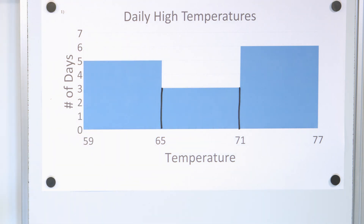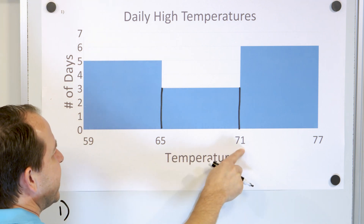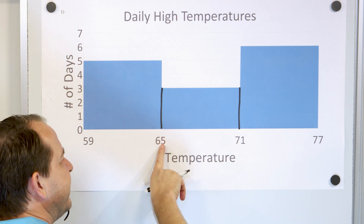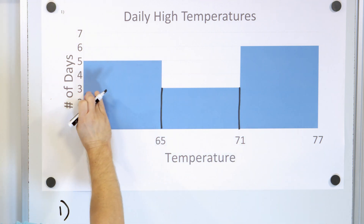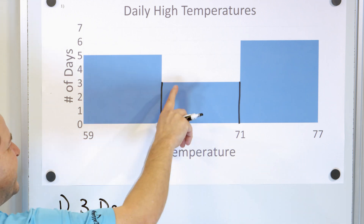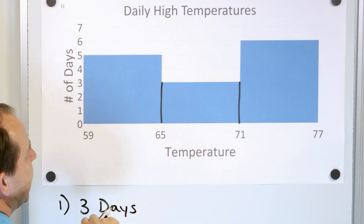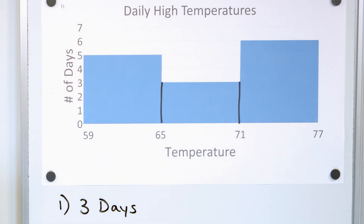Let's answer question number one. For how many days was the temperature between 65 and 71 degrees? You look at the bin from 65 to 71 degrees, and we can see that only three days had temperatures in that range — maybe 66 degrees one day, 69 degrees another — but only three days total. So the answer is three days.